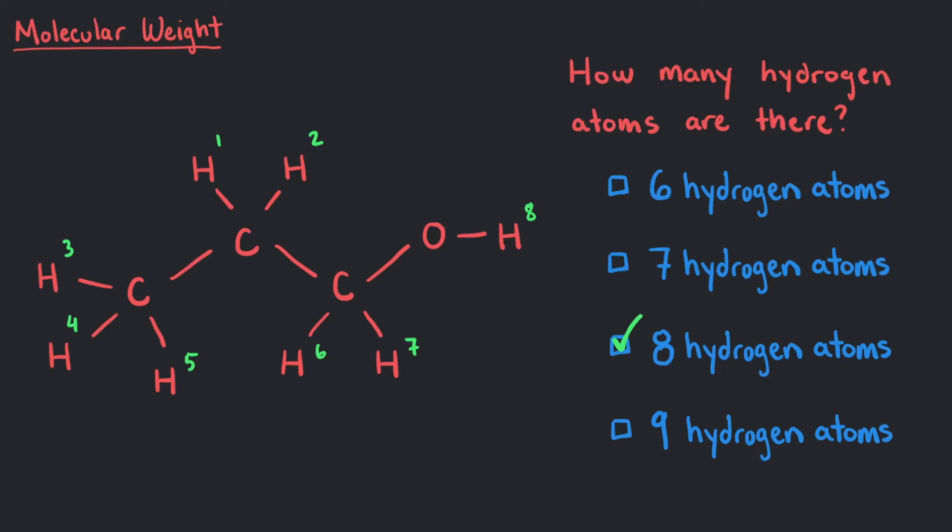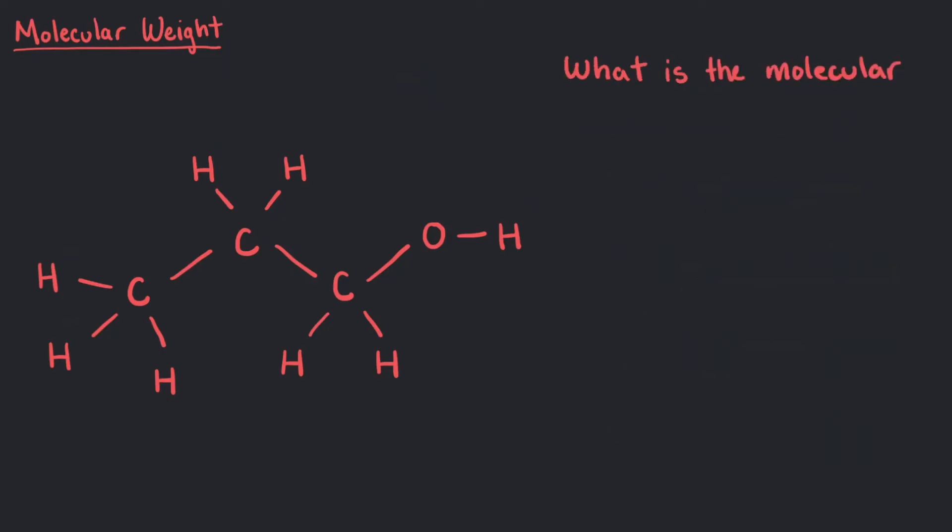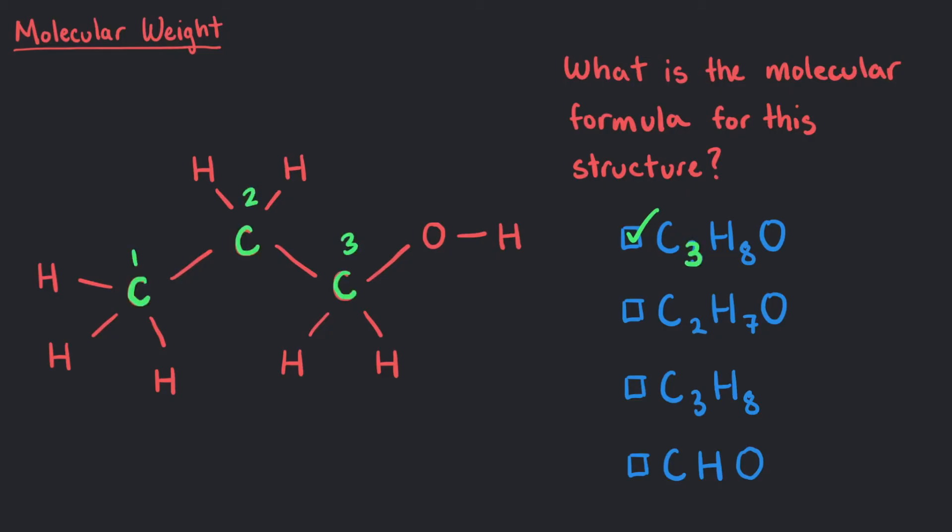We can count up the number of atoms to put in a molecular formula for this molecule. Each atom gets their symbol and the number of atoms in the structure as a subscript. What is the molecular formula for this structure? Yes, our molecular formula is C3H8O because there are three carbon atoms, eight hydrogen atoms, and one oxygen atom.